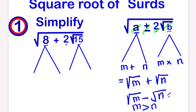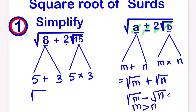The two numbers are 5 and 3: 5 plus 3 is 8, and 5 times 3 gives us 15. So everything is perfect, we have the two numbers. Our answer will be equal to the square root of 5 plus the square root of 3.